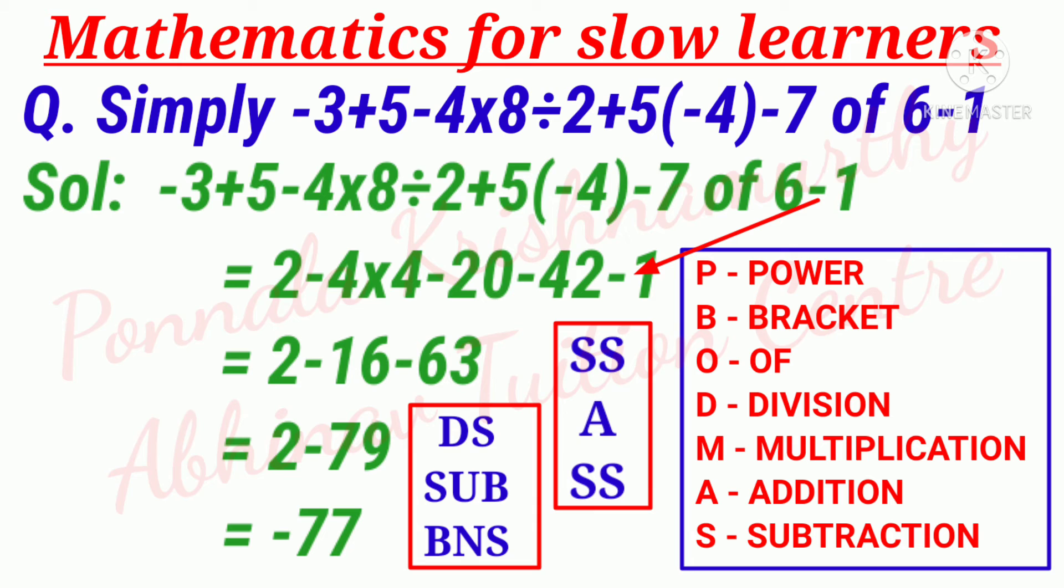That equals 2 - 4 × 4 = 16, minus 20, minus 42, minus 1. Same sign addition, same sign that becomes -63. That equals 2 - 16 - 63 becomes -79.